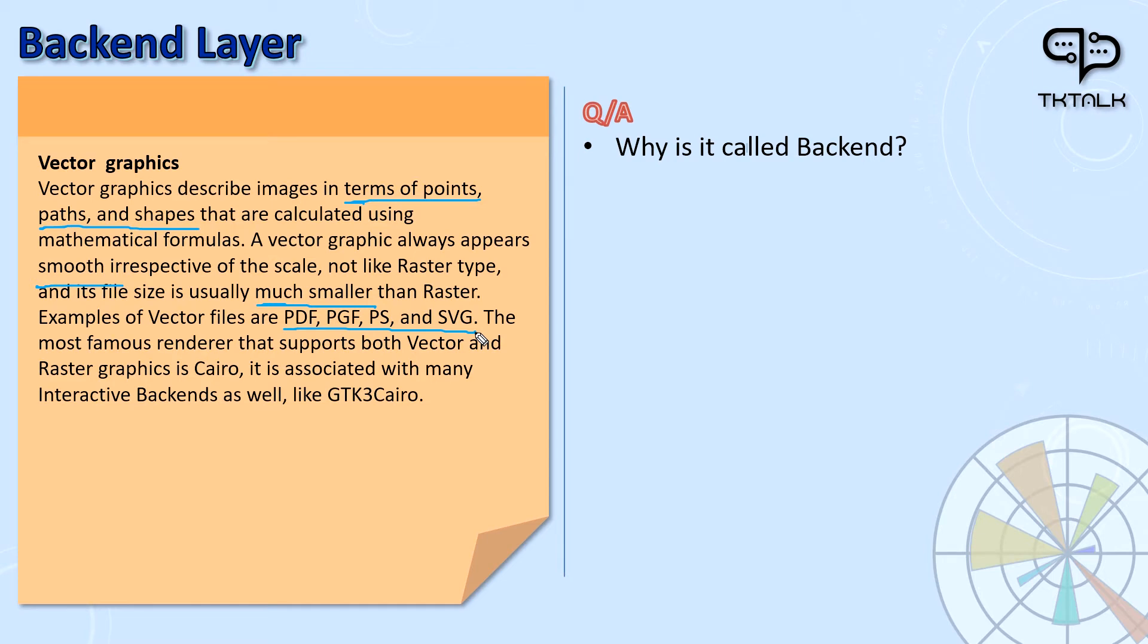Examples of vector files are PDF, SVG, PS, and EPS. The most famous renderer that supports both vector and raster graphics is Cairo. You will find it associated with many interactive backends as well, like GTK3 Cairo.